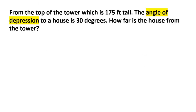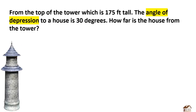Word problem number three: From the top of a tower which is 175 feet tall, the angle of depression to a house is 30 degrees. How far is the house from the tower? We have the tower and the house.